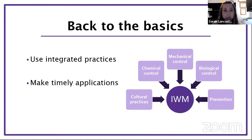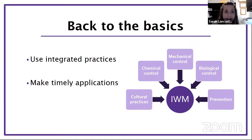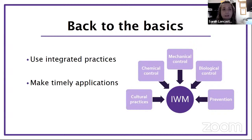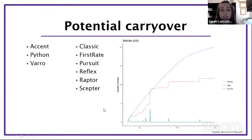The other key point is the importance of timely applications. The most common call I get on sorghum weed management is managing Palmer amaranth post-emergence. Two things to say about that: number one, you've got to have a pre down — the best time to control any weed, especially pigweeds, is before you ever even see it. And then being timely with those post-emergent applications. We do have some products labeled for Palmer amaranth control in sorghum, but that depends on getting those Palmers when they're small.